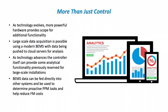BEMS data can also be fed into other systems to determine proactive PPM tasks — planned preventative maintenance. Typically you'd have a schedule to check a pump every three months, but with BEMS monitoring that pump, maybe we don't need to do it every three months. We can use analytical data to confirm the pump is running fine and extend that maintenance interval, making better use of time and reducing not only energy costs but facilities management costs as well.